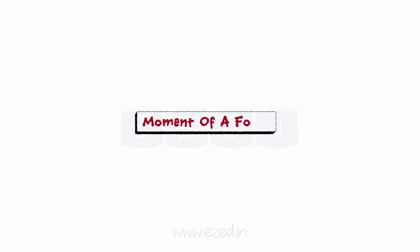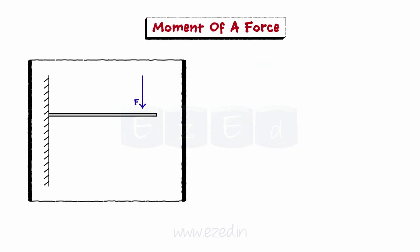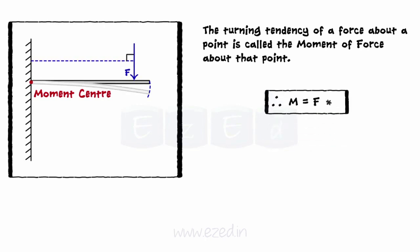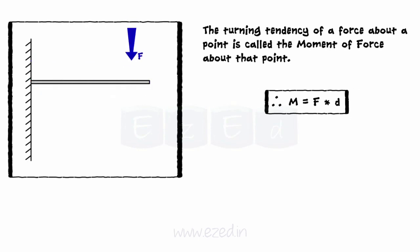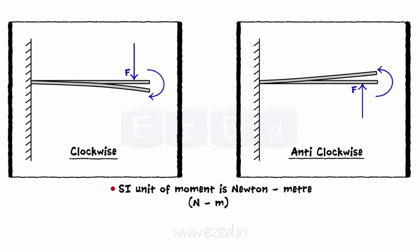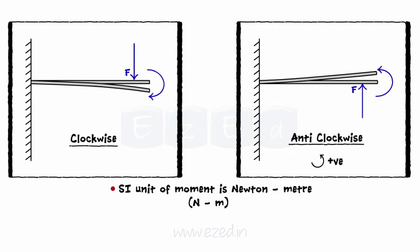Let's see what moment of a force is. When a force is applied to a body, it has the tendency to turn the body about some point. The turning tendency of a force about a point is called the moment of force about that point. The moment of a force can be calculated by finding the product of the force and the perpendicular distance from the moment's centre to the force — that is, M is equal to F into D. The SI unit of moment is Newton meter. We will use the sign convention: anticlockwise positive and clockwise negative.